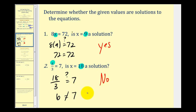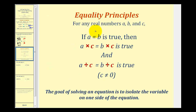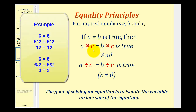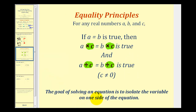Now that we understand what a solution is, let's look at some equality principles. For any real numbers, if a equals b is true, and we multiply both sides of the equation by some value c, the result will also be true. Similarly, if we divide both sides by c — as long as c doesn't equal zero — the equation remains true. We can use these principles to solve equations by isolating the variable on one side, multiplying or dividing both sides of the equal sign.